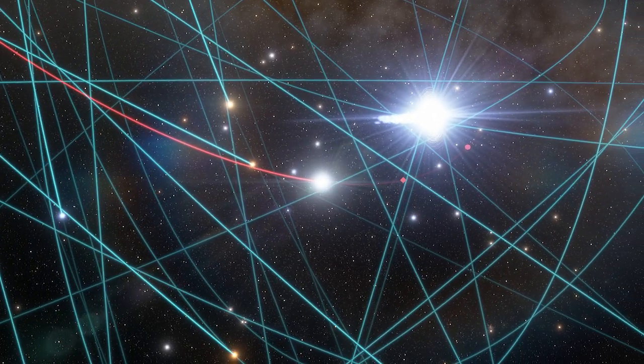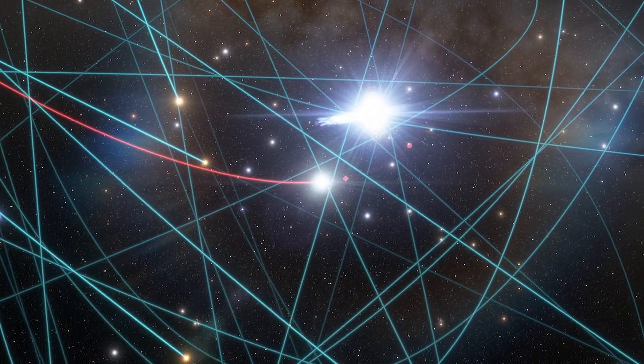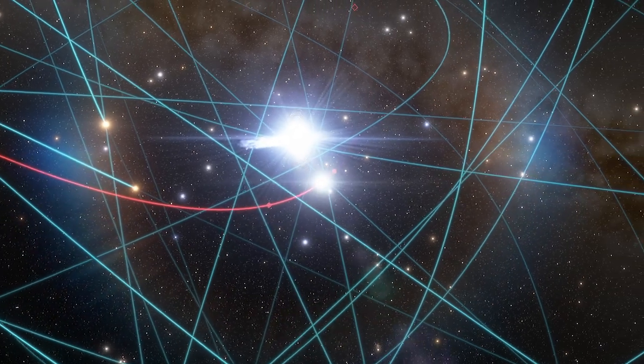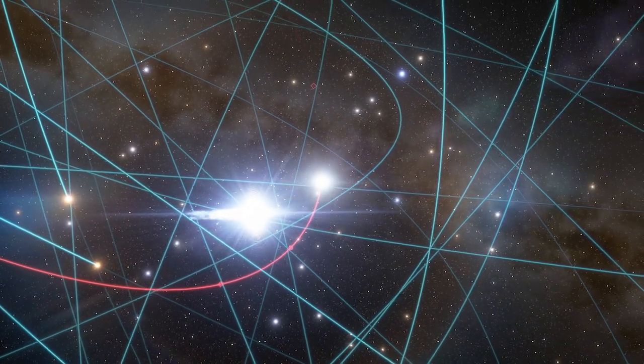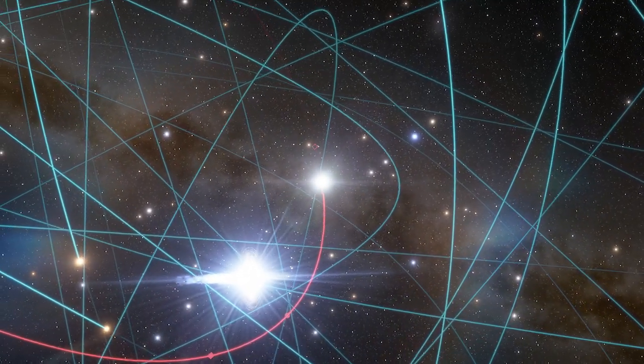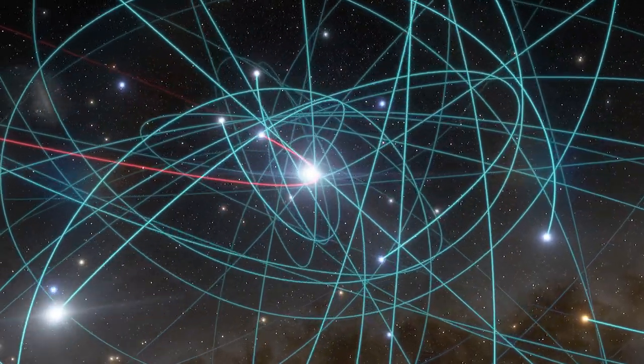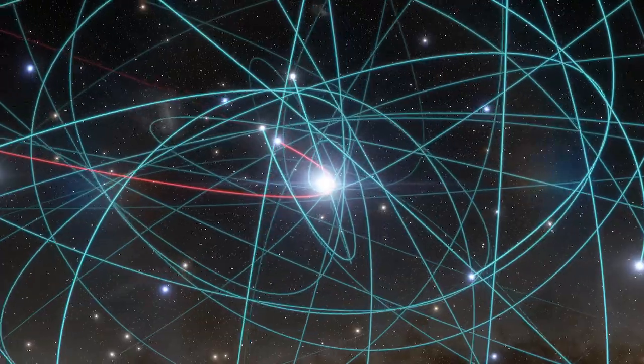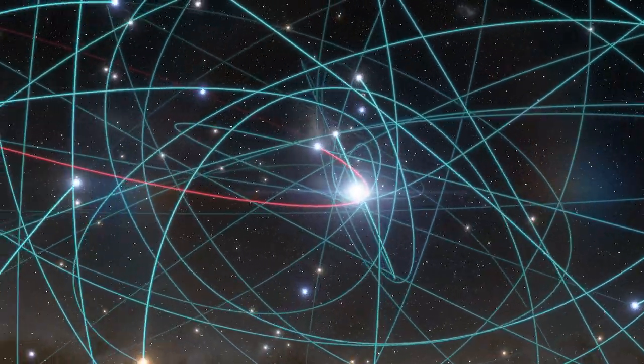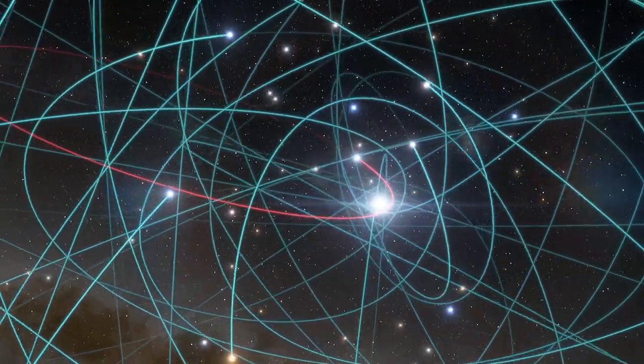S4714 is just one of a group of stars that we have now discovered skimming Sagittarius A on closer orbits than any other stars discovered previously. This discovery suggests there are even more stars on daredevil orbits around our galaxy's supermassive black hole.